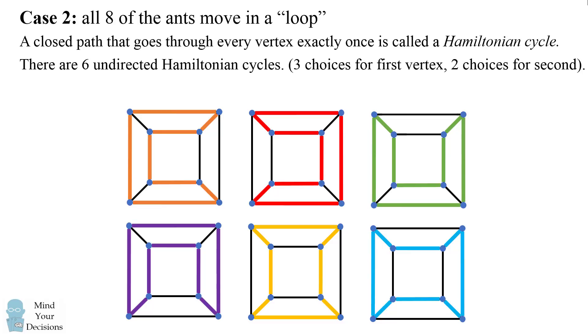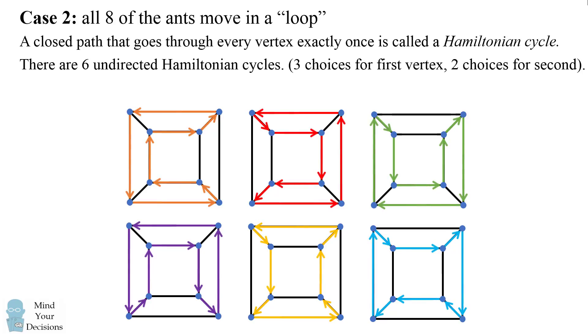For each of these we can actually place directions to create the ways that the ants might possibly flow on the cube. These are directed Hamiltonian cycles. Now this is one way that we could draw the arrows, but we could also draw the arrows in the opposite direction. Therefore for each undirected Hamiltonian cycle we have two possible directions for the loop.